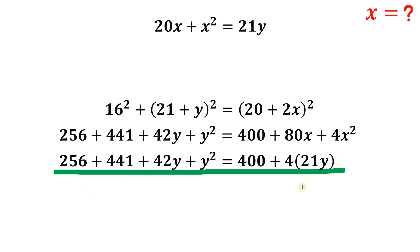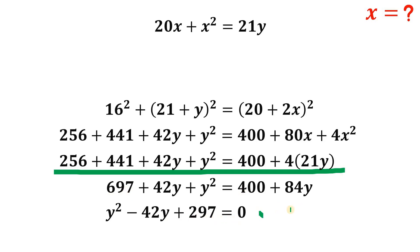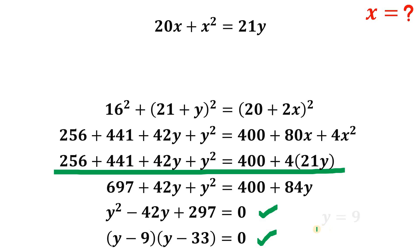Simplifying: 256 + 441 gives 697, bringing down 42y + y², and 4 × 21y = 84y. Combining like terms and subtracting 84y from both sides: y² − 42y + 297 = 0. Factoring: (y − 9)(y − 33) = 0. Using the zero property, y = 9 or y = 33. Both are accepted since y is a positive side length.